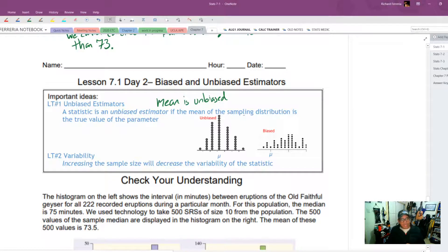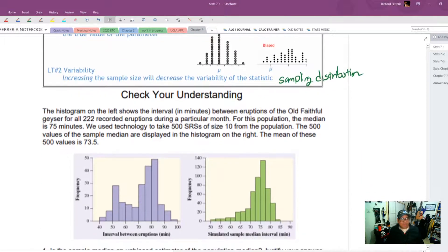And then finally, increasing the sample size will always decrease the variability in the statistic and really the statistics sampling distribution. So the sampling distribution gets more narrow as the sample size increases. Okay. So slowly, slowly, slowly, we're building up our understanding of sampling distributions. So let's take a look at this next check your understanding bit.